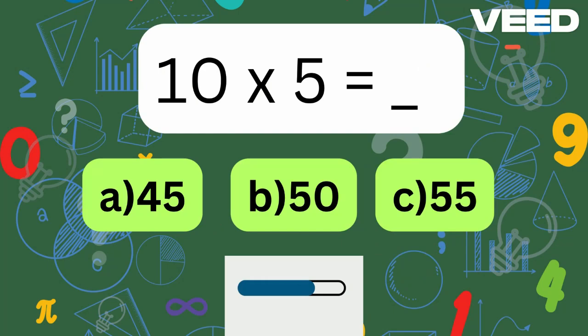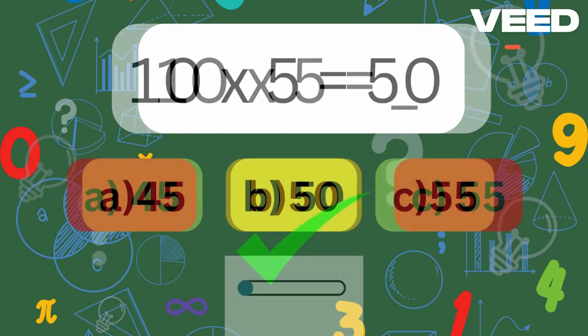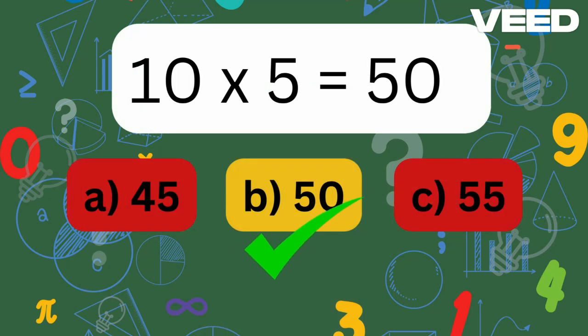10 times 5 is? Correct, 10 times 5 is equal to 15.